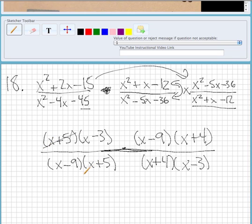We can cancel out the x plus 5s, the x minus 3s, the x minus 9s, and then the x plus 4s. So everything cancels out.